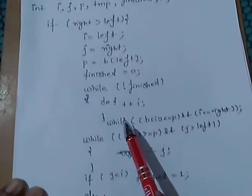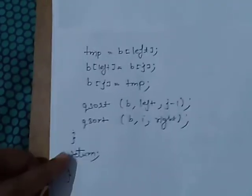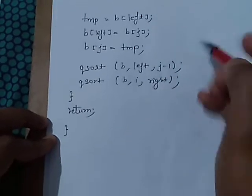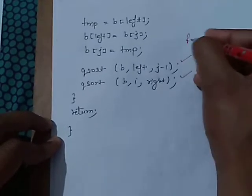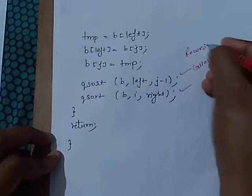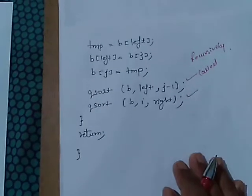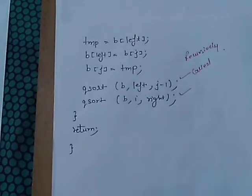Now this function is again called here. So this function is recursively called again and again. So the quick sort facilitates recursion concept.